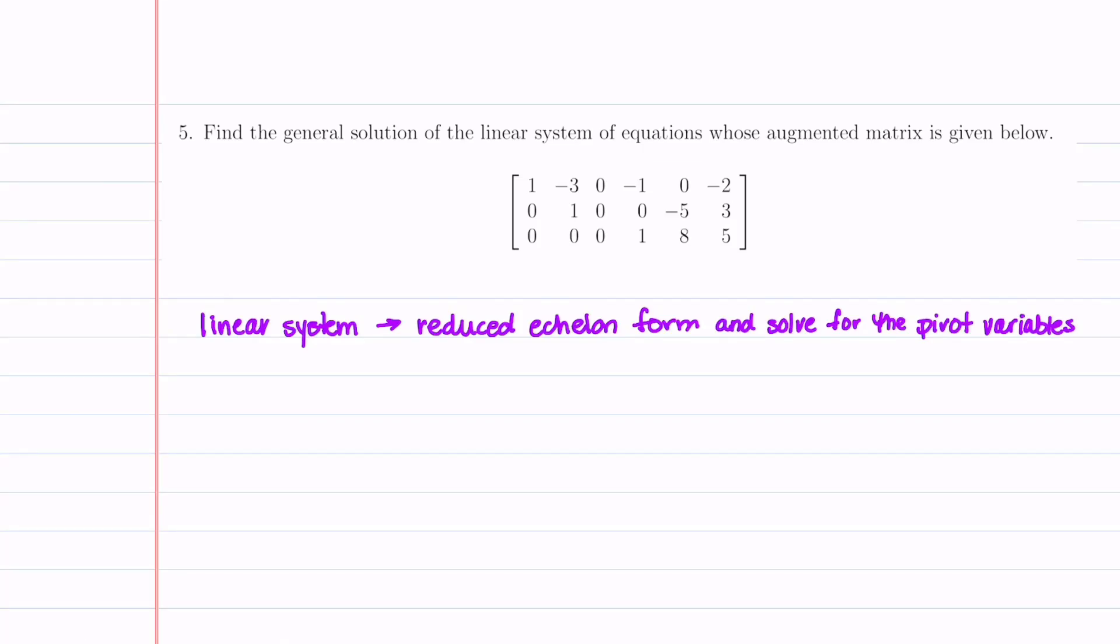Welcome to Understand the Math. In this problem, we're going to find the general solution to this linear system of equations whose augmented matrix is given below. So let's emphasize that this is an augmented matrix. As soon as you see that, I would suggest that you take a line and you put it right there. And that way you know you don't have a coefficient matrix, you have an augmented matrix, and you can distinguish the left-hand side from the right-hand side.